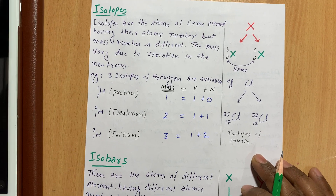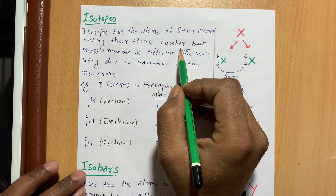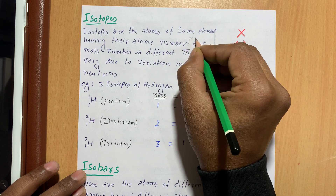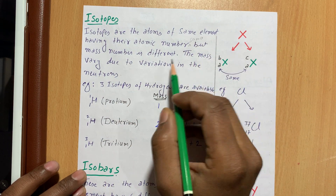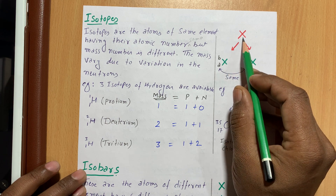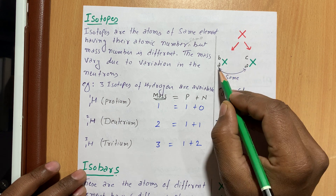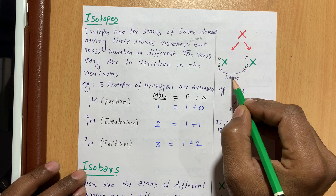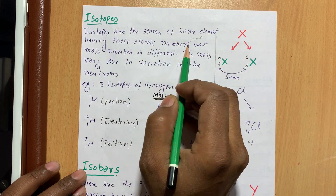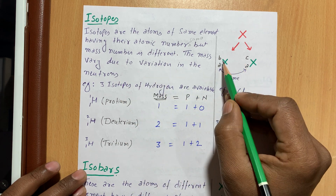The next topic is isotopes. Isotopes are atoms of the same element having the same atomic number but different mass numbers. The atomic number is the same, but the mass number is different. The mass varies due to variation in the number of neutrons.